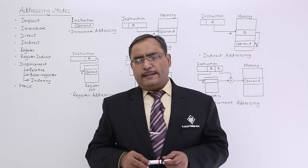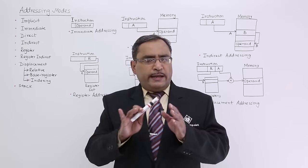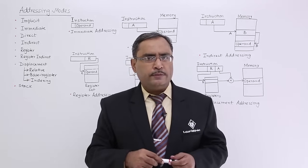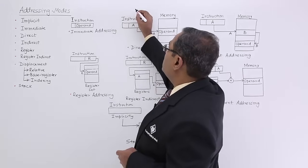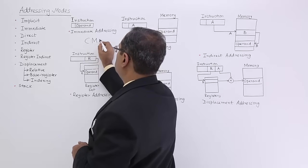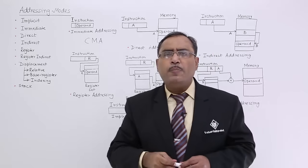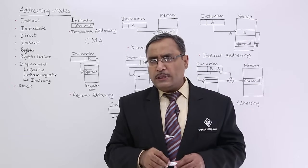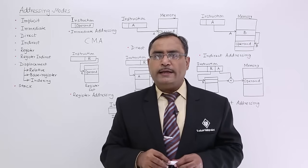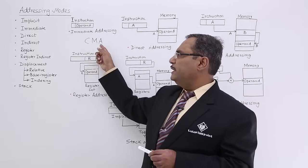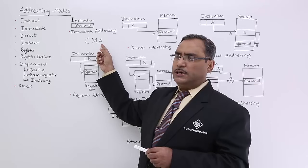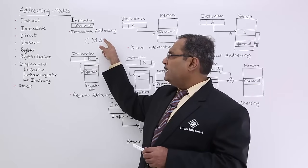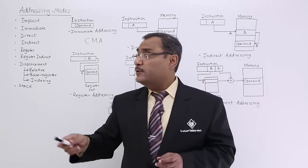What is the meaning of implicit? It means I am not mentioning the operand explicitly, but inherently — by default — the instruction knows from where it is supposed to access the operand. For example, CMA stands for Complement Accumulator. This instruction CMA will replace the current value in the accumulator with its one's complement. No operand is mentioned; it implicitly knows the operand has to be accessed from the accumulator. This is known as implicit addressing mode.